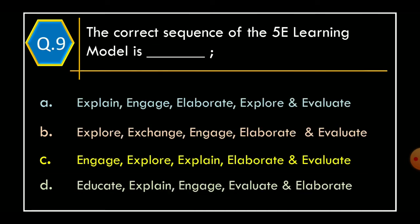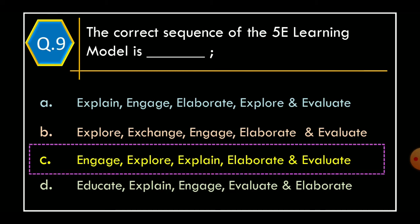Question 9. The correct sequence of the 5E learning model is: Option A. Explain, engage, elaborate, explore, and evaluate. Option B. Explore, exchange, engage, elaborate, and evaluate. Option C. Engage, explore, explain, elaborate, and evaluate. Option D. Educate, explain, engage, evaluate, and elaborate. The correct option is Option C: Engage, explore, explain, elaborate, and evaluate.